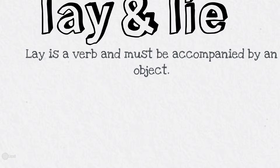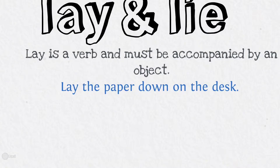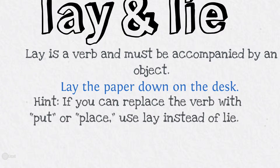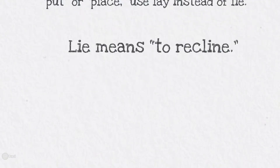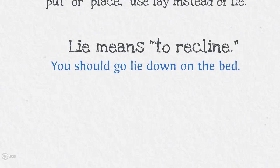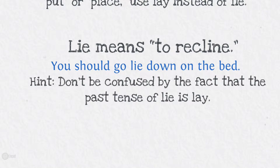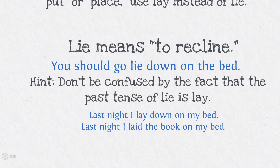Lay and lie. Lay is a verb and must be accompanied by an object: 'Lay the paper down on the desk.' Hint: if you can replace the verb with 'put' or 'place,' use 'lay' instead of 'lie.' Lie means to recline: 'You should go lie down on the bed.' Don't be confused by the fact that the past tense of 'lie' is 'lay.'